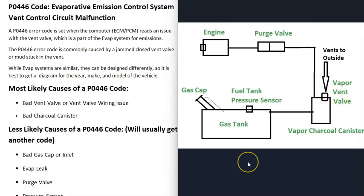Mainly what's called a vent valve will need troubleshooting. Depending on the vehicle — the year, make, and model — there can be differences in what's going on inside the EVAP system, so it's always a good idea to get a diagram for your specific vehicle. The basics are that gas vapors leave the gas tank, go through a hose to what's called a vapor charcoal canister, which stores the gas vapors and has activated carbon inside to filter them. Either combined with the charcoal canister or separate is the vent valve.